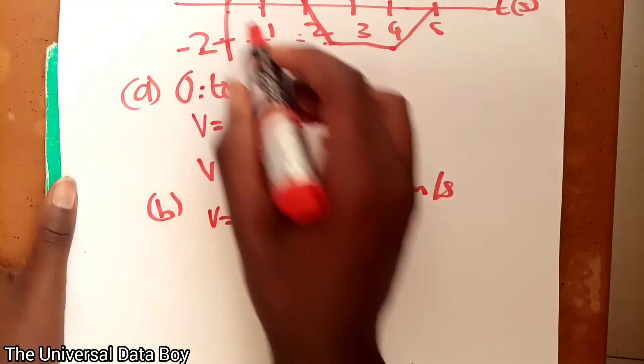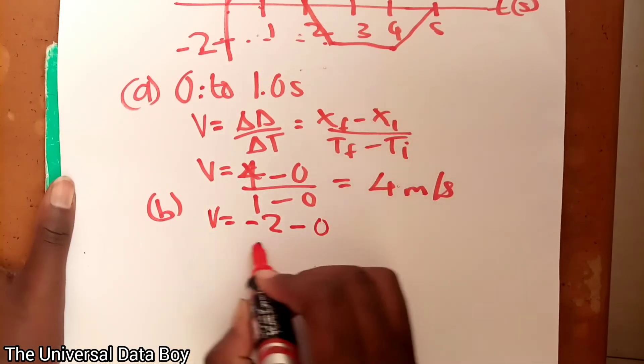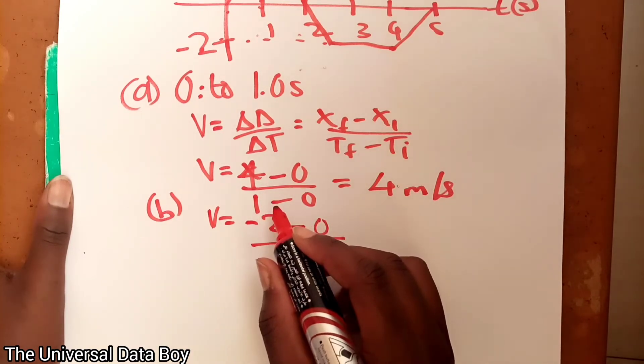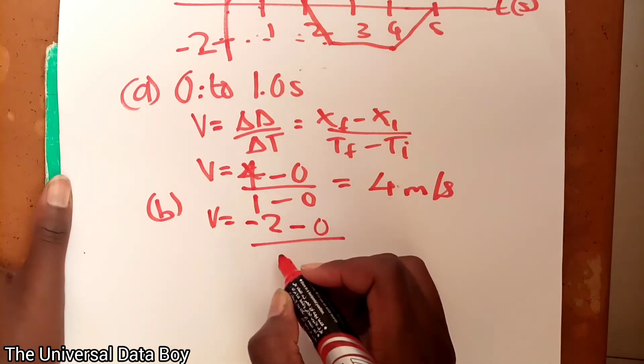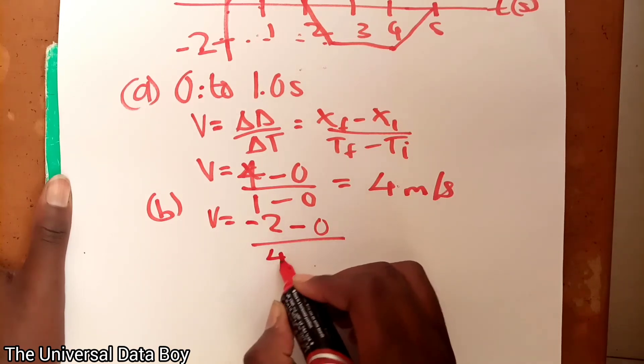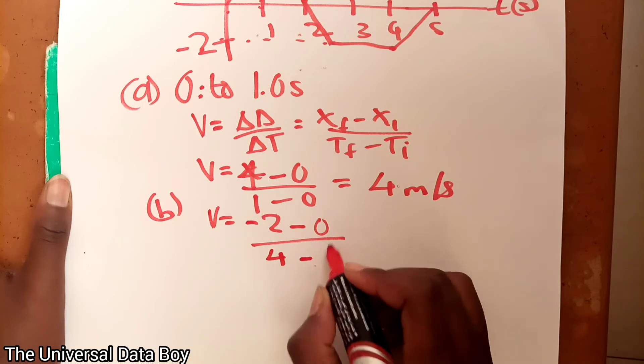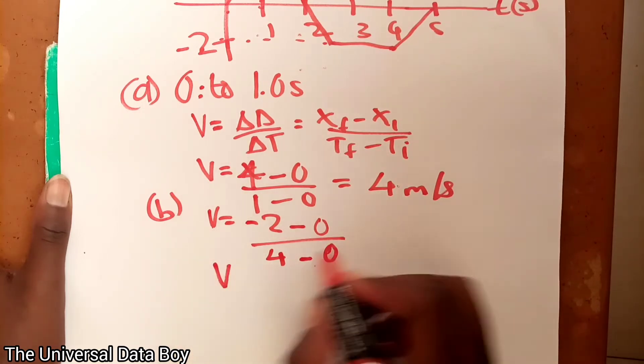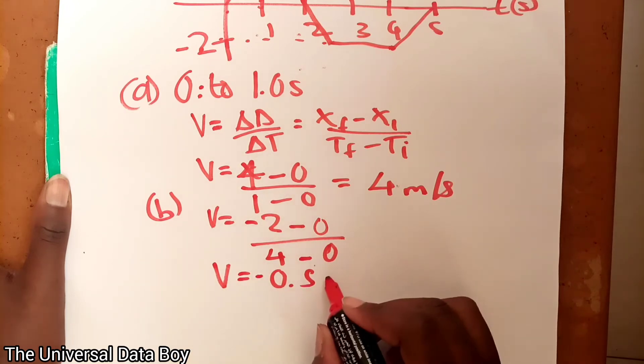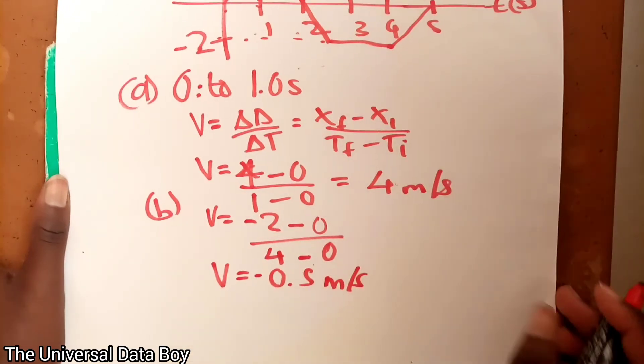The initial distance is 0. Then the time, the initial time is, the final time is 4 of course, then the initial is 0. So then we are going to have our velocity being equal to negative 0.5 meters per second